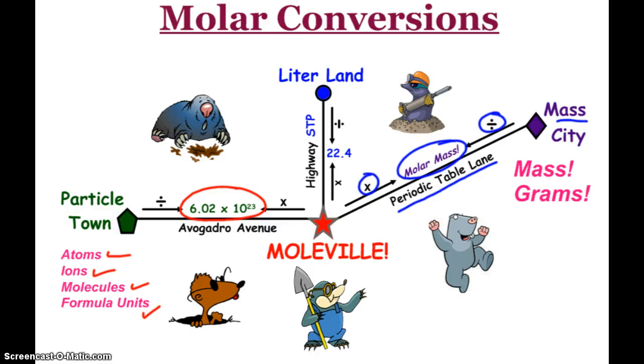So, to get from moles to particles, I multiply by Avogadro. From particles to moles, I divide. And then, yes, one mole of a gas at STP is 22.4 liters. And so, we'll definitely be looking a little more closely at that when we get into our unit on gases.